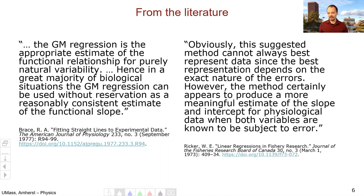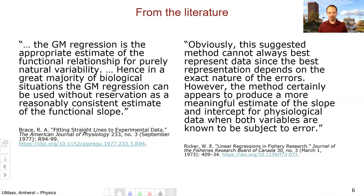Also, linear regressions in fishery research from the Journal of Fisheries Research Board of Canada back in 1973 states that the geometric mean regression certainly appears to produce more meaningful estimates of the slope and intercept for physiological data when both variables — x and y — are known to be subject to error. So it's a better method when you have both x and y uncertainties than ordinary least squares. This is one of the examples where this lab takes what you've already seen and goes that next step, incorporating more advanced statistical tools with more uncertain data. This concludes the video — from here, take your data, do a GMR fit, make a prediction, and see if you're right.